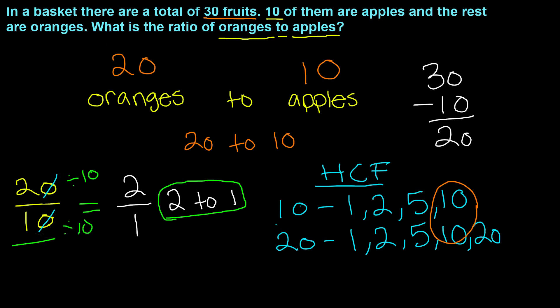So if we cut the 0 with the 0, we will be left with 2 and 2 to 1, and that is going to be our simplified ratio.